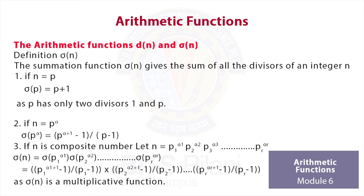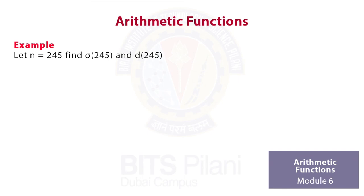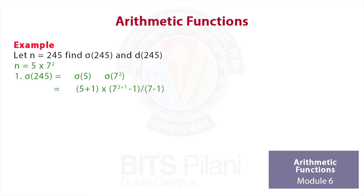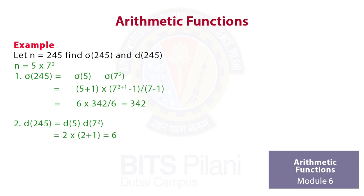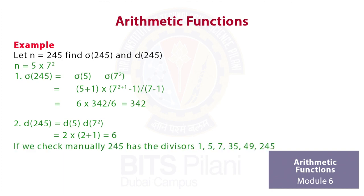Let's try some examples. Given n = 245, we are asked to find σ(245) and d(245). We first write n as a product of prime powers: n = 5 · 7². So σ(245) = σ(5) · σ(7²). Using the first formula, σ(5) = 5 + 1 = 6. Using the second formula, σ(7²) = (7^3 − 1)/(7 − 1) = 342/6 = 57, giving σ(245) = 6 · 57 = 342. For d(245), we write it as d(5) · d(7²).